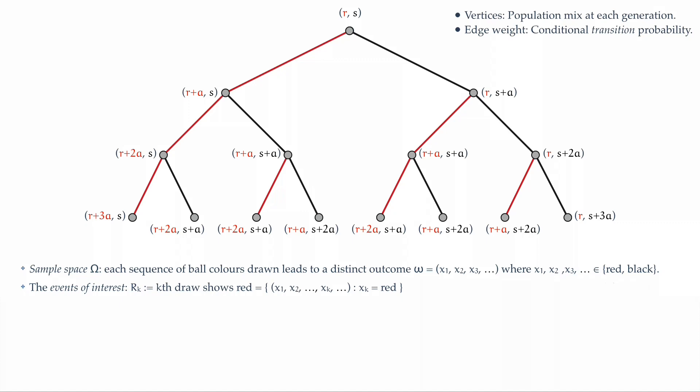R sub 2 is the event that the second ball drawn is red, and these will constitute, in the second tier of the tree, the two red steps moving to your left. And those two vertices, R plus 2a and s, and R plus a and s plus a, both represent a second red ball drawn.